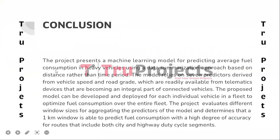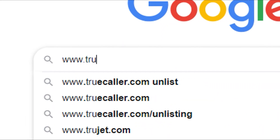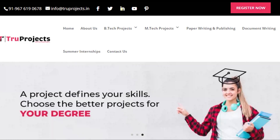The project presents a machine learning model for predicting average fuel consumption in heavy vehicles using a data summarization approach based on distance rather than time period. The model relies on seven predictors derived from vehicle speed and road grade, which are readily available from telematics devices becoming an integral part of connected vehicles. The proposed model can be developed and deployed for each individual vehicle in a fleet to optimize fuel consumption over the entire fleet.